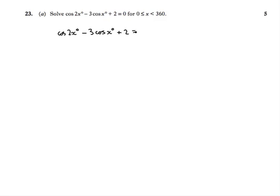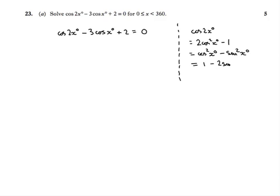That's never very good for making progress, so we're focusing on cos 2x and seeing if we can replace that by a different version, a double angle formula. There are three different versions of cos 2x: one is 2 cos squared x minus 1, another is cos squared x minus sin squared x, and a third is 1 minus 2 sin squared x.